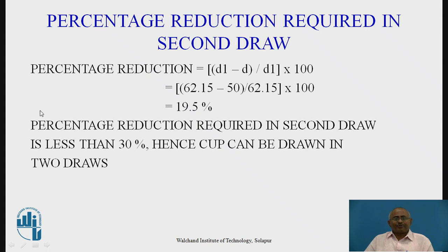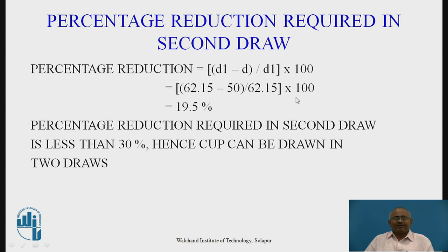Now we have to calculate the percentage reduction required in the second draw. The formula is (D1 − D) / D1 × 100, where D1 is the diameter after the first draw and D is the diameter after the second draw. Therefore: (62.15 − 50) / 62.15 × 100 = 19.5%. As this percentage reduction required in the second draw is less than 30%, it is confirmed that the cup can be drawn in two draws only.